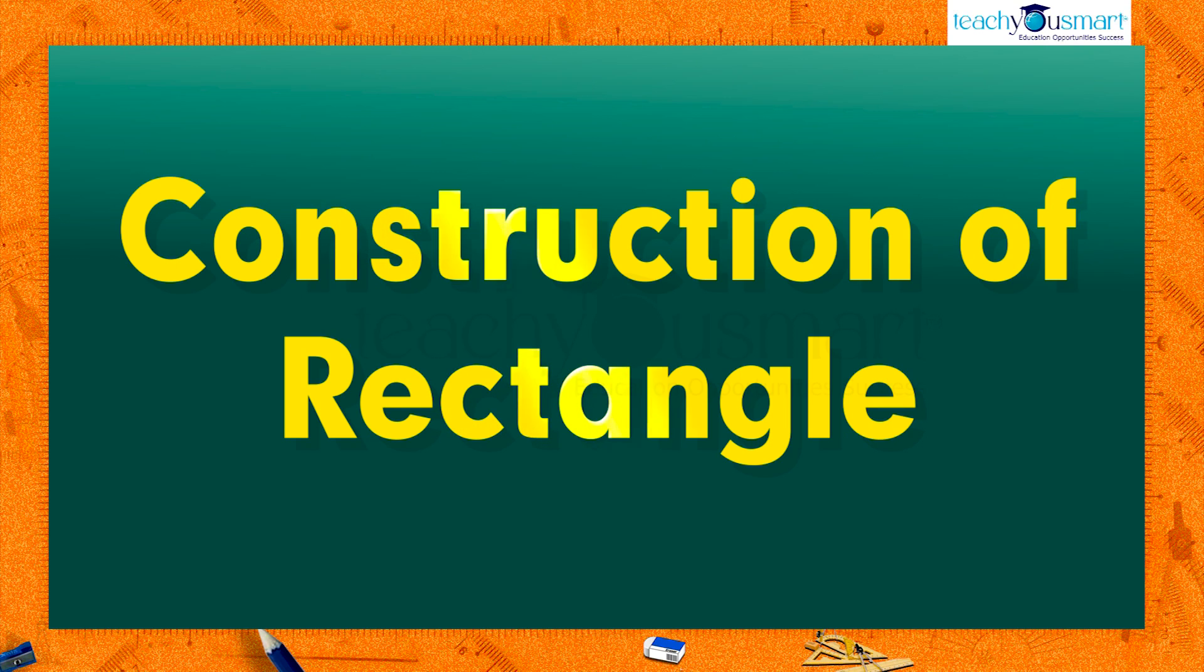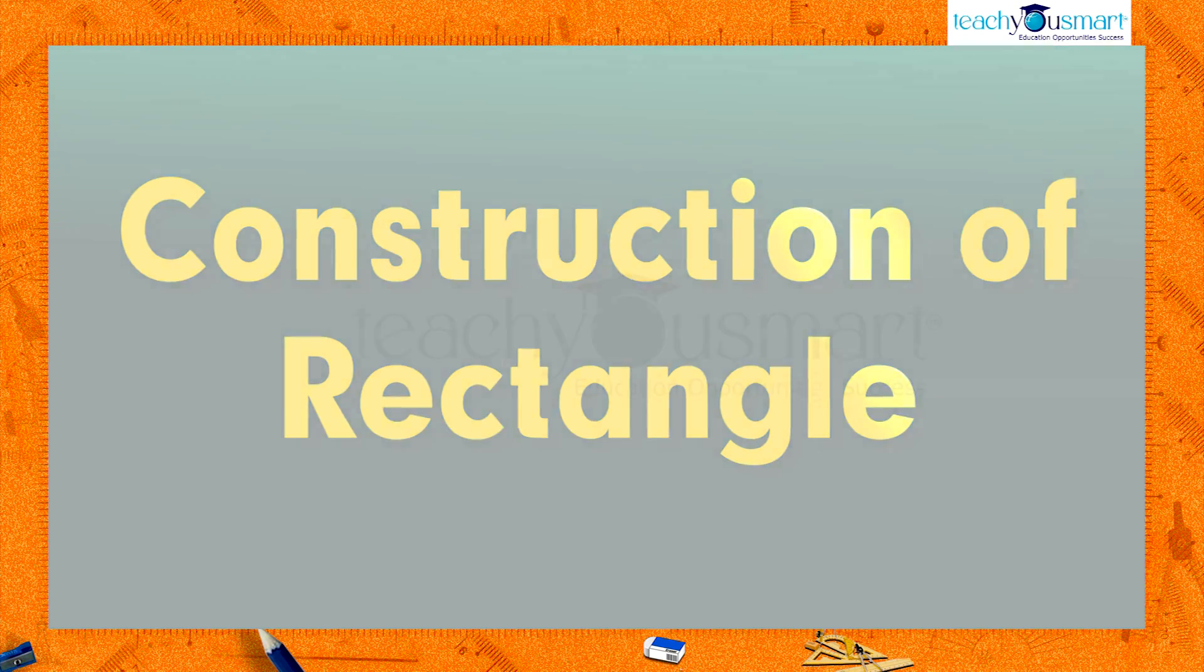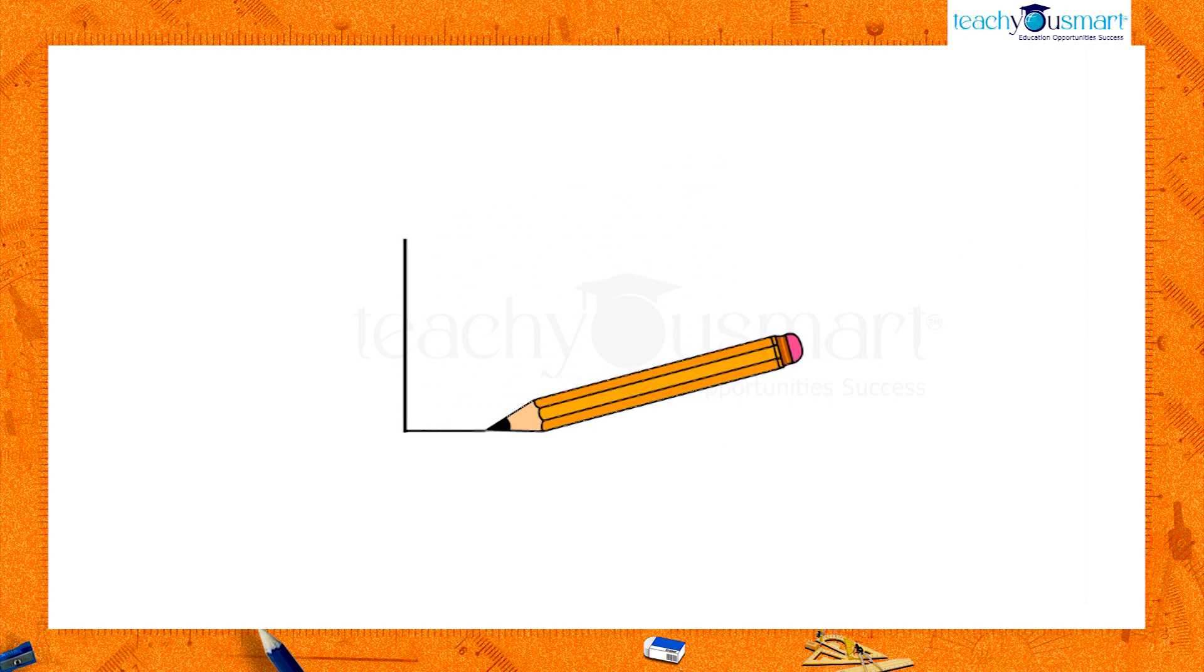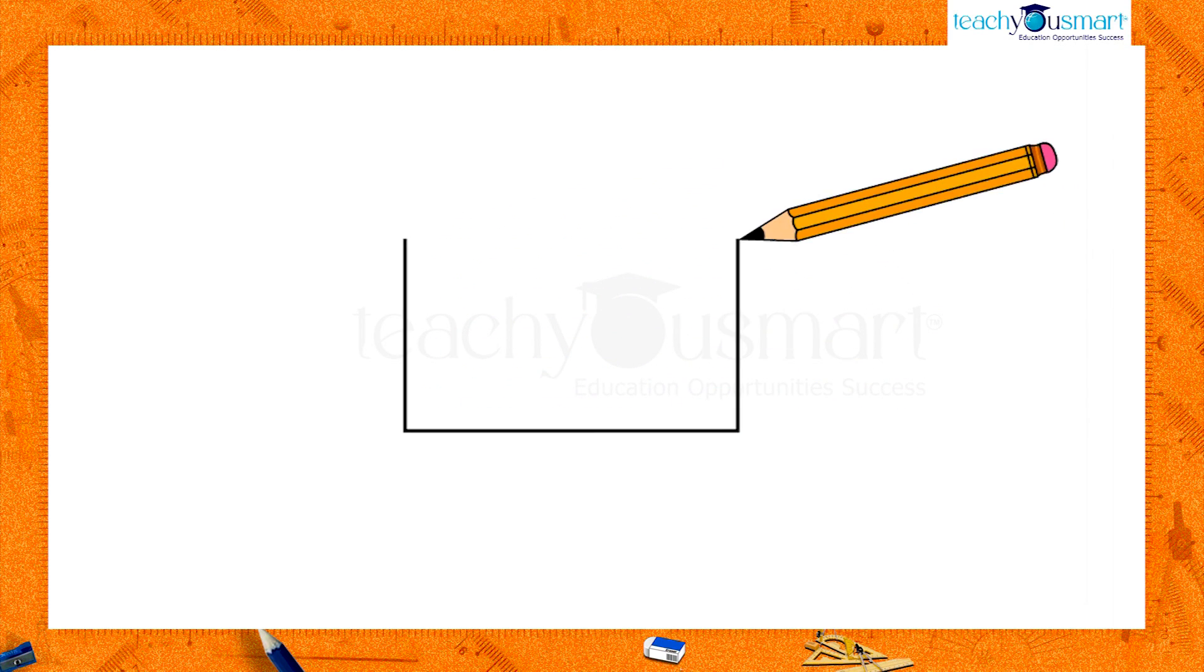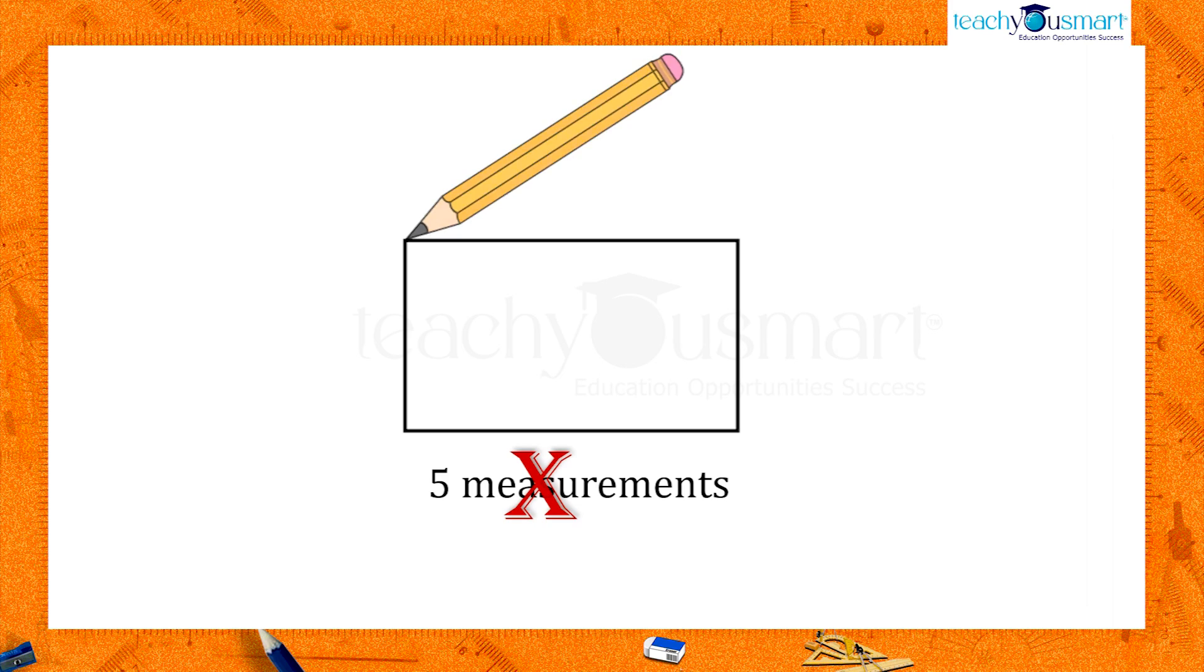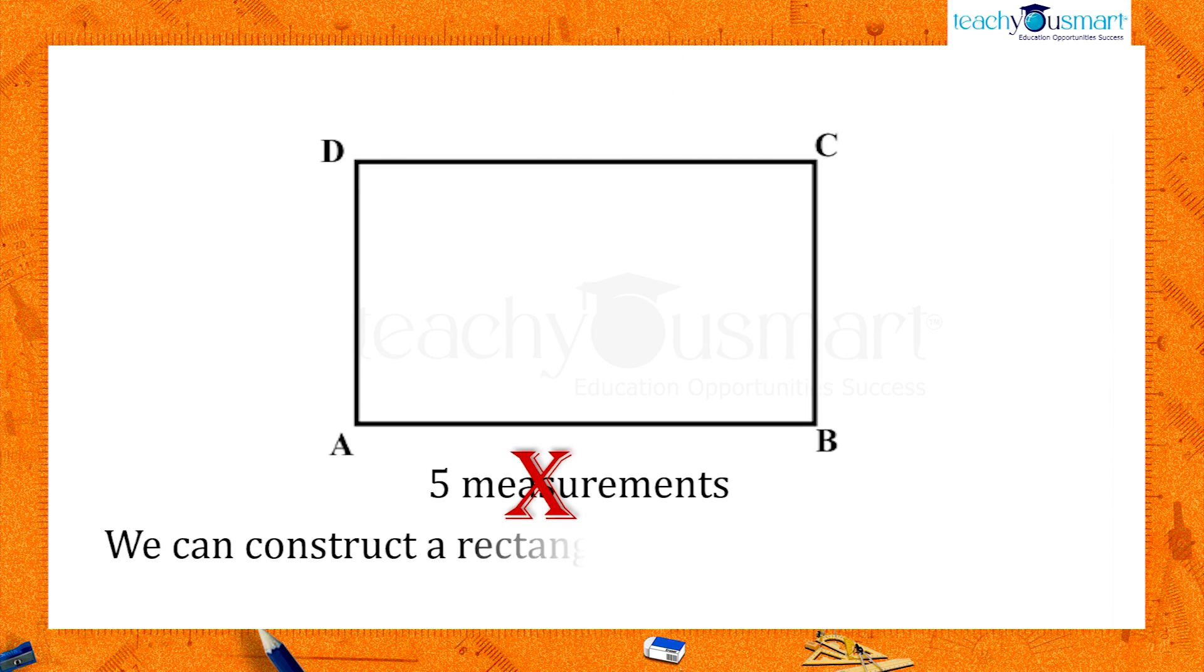Today we are going to construct another special quadrilateral, that is, the rectangle. As we have seen in other special quadrilaterals, even rectangles do not require five measurements to construct it. We can construct a rectangle when two measurements are given.